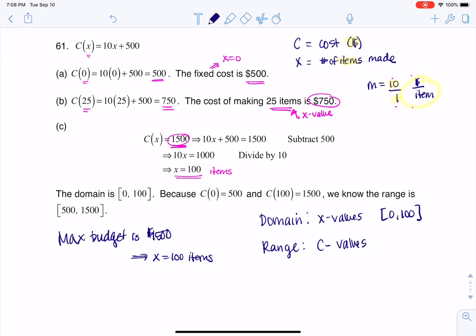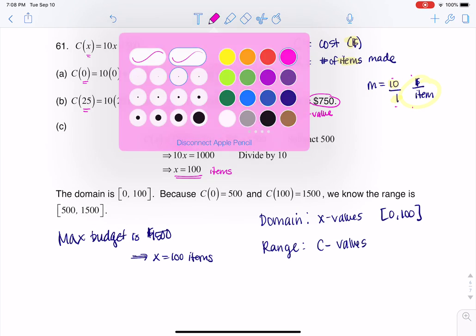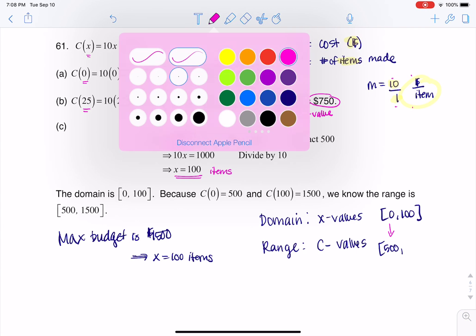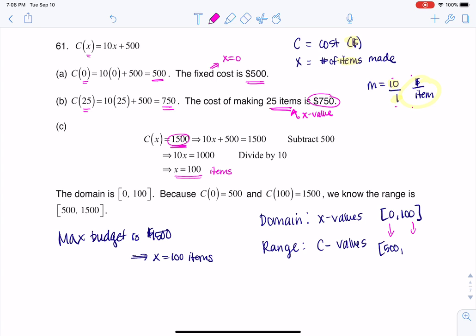That's what I'm allowed to make because I'm allowed to spend up to $1,500. And keep in mind, we've already mapped this out. If you make zero items, that's going to cost you $500. And if you make 100 items, that's going to cost you $1,500, which is why I have those values for my domain, zero to 100, and for my range, 500 to 1,500.